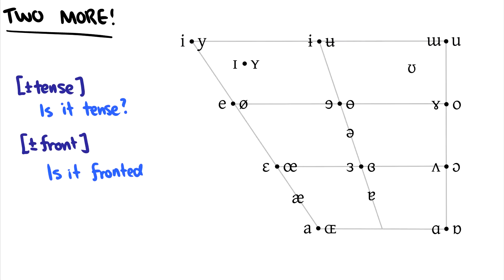There's two more that we have to add for the sake of simplicity and description. Plus or minus tense asks, is the vowel tense or is it lax? For instance, a tense vowel like e, so we have plus tense here, compared with the vowel i, which is minus tense.